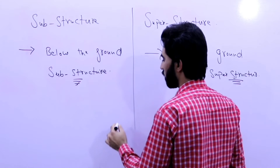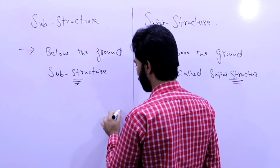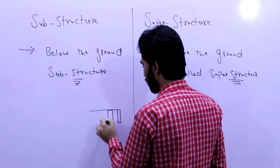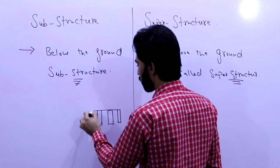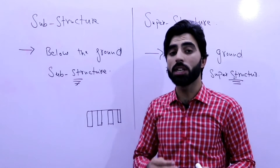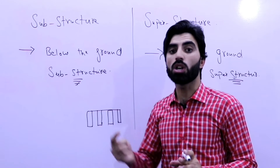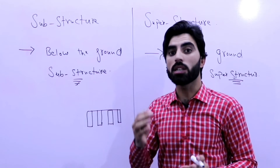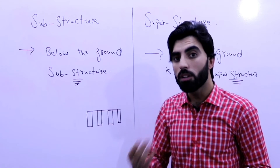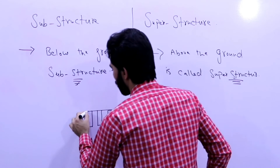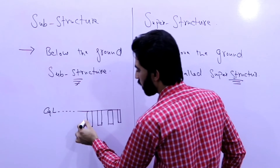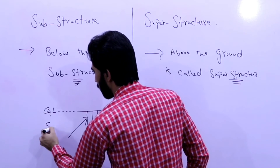You can see this is a diagram for this. The foundation is here in the substructure. We design the substructure to transfer the load of the superstructure down to the foundation. You can see this is the ground level, and this part of the building below it is called substructure.